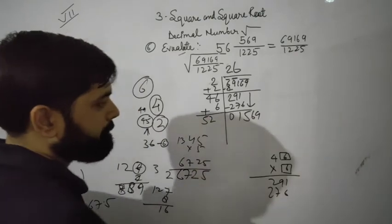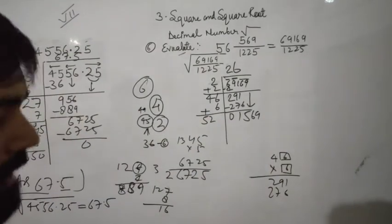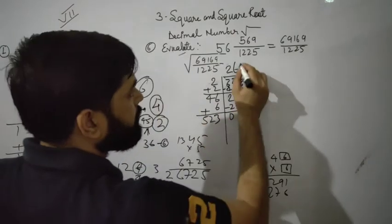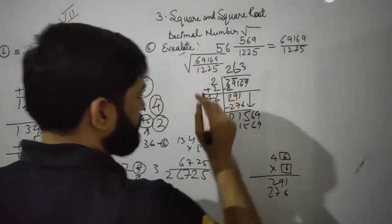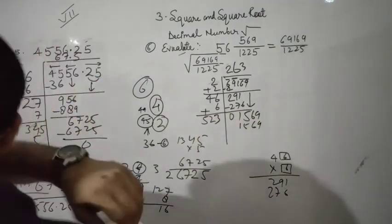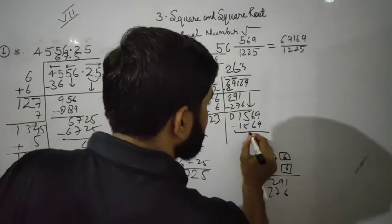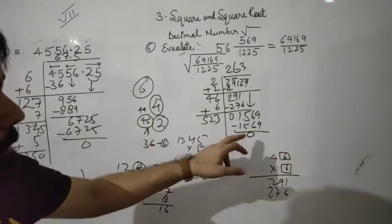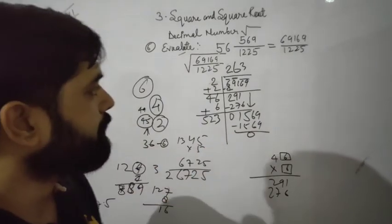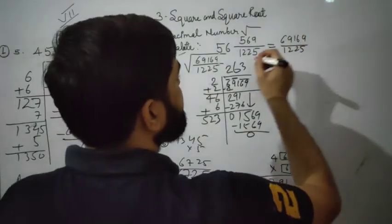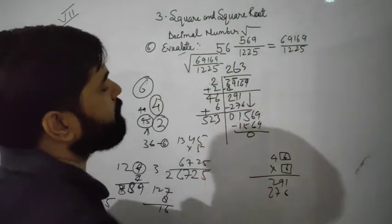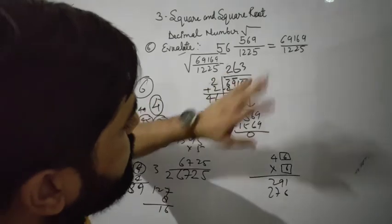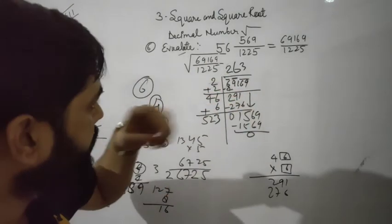So the answer will be what? The square root of 69169 equals 263.